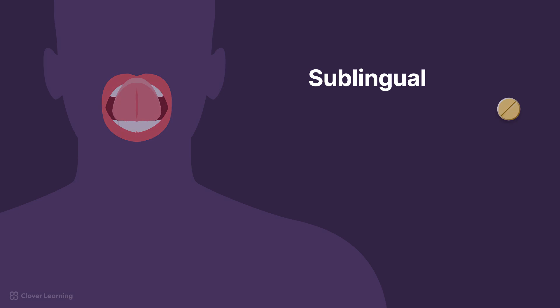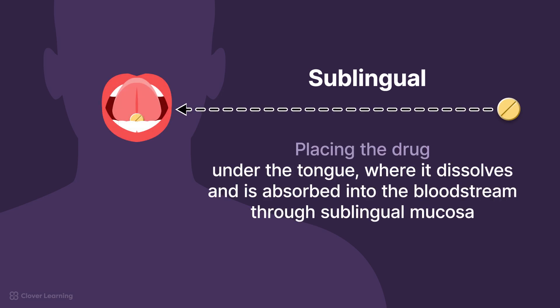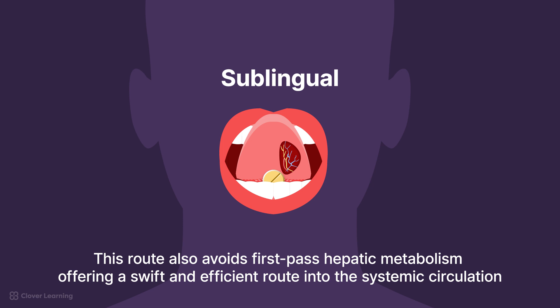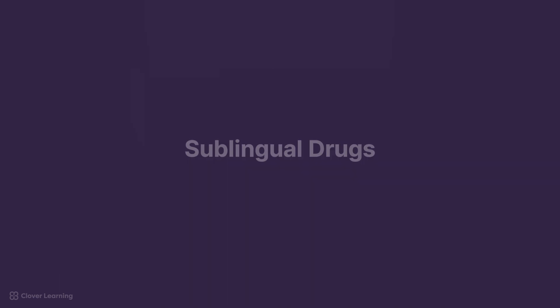Finally, sublingual administration involves placing the drug under the tongue, where it dissolves and is absorbed into the bloodstream through the sublingual mucosa. The drug is placed beneath the tongue and allowed to dissolve. The sublingual area, being highly vascular, facilitates rapid absorption of the drug. This route also avoids first-pass hepatic metabolism, offering a swift and efficient route into the systemic circulation. The sublingual route is favored for certain cardiovascular drugs, steroids, and enzymes.